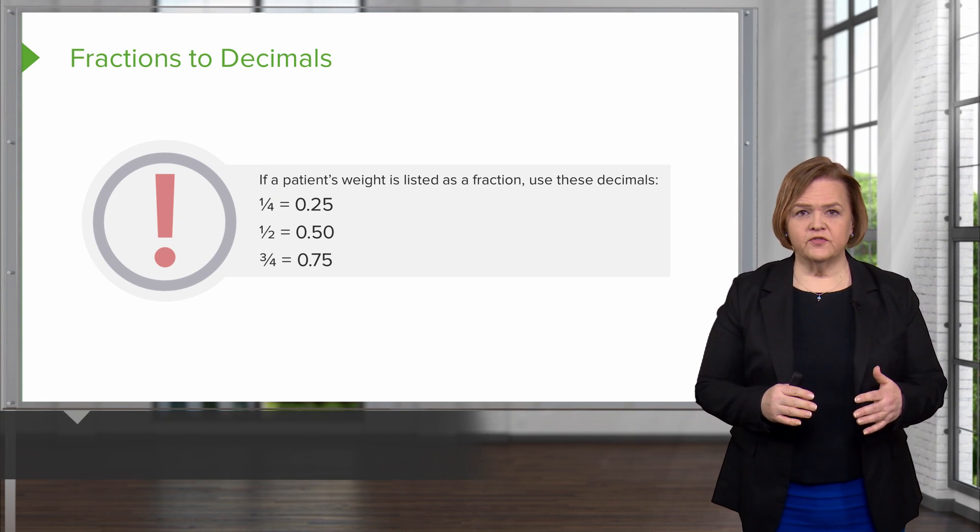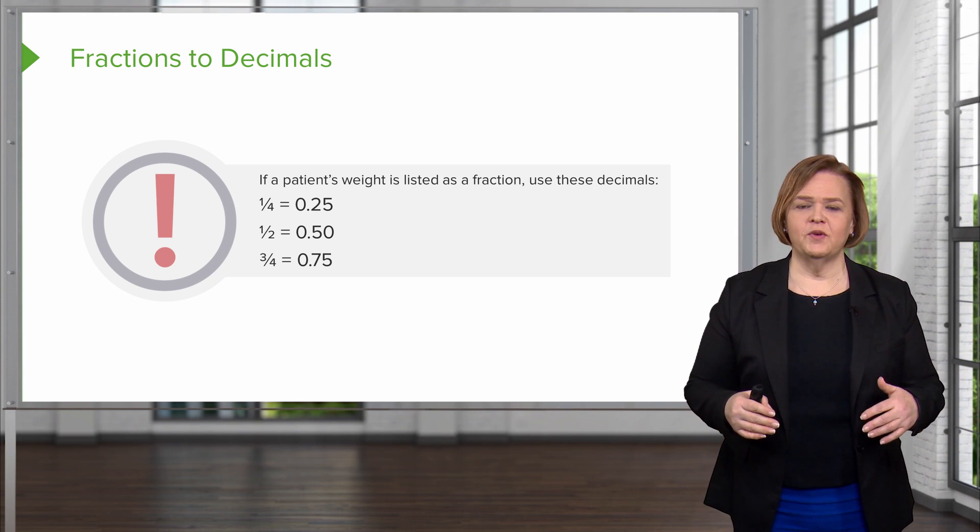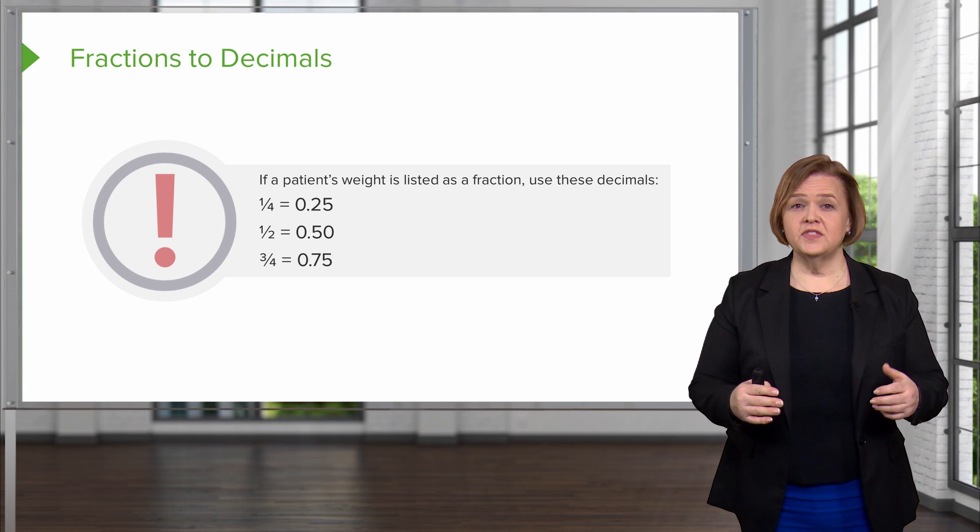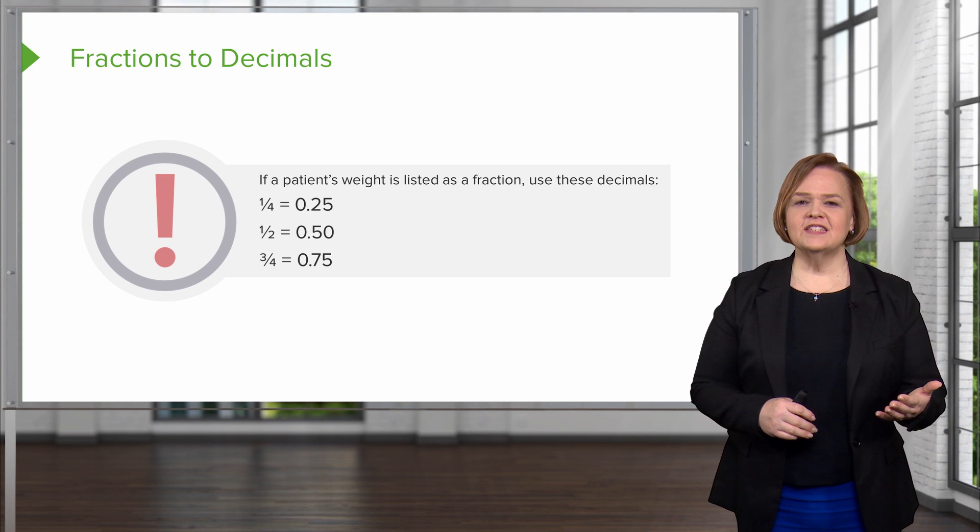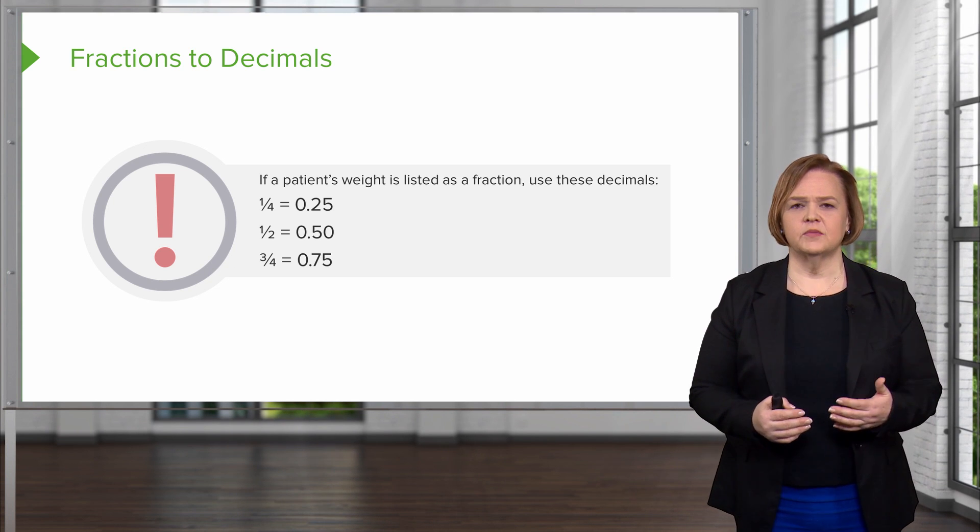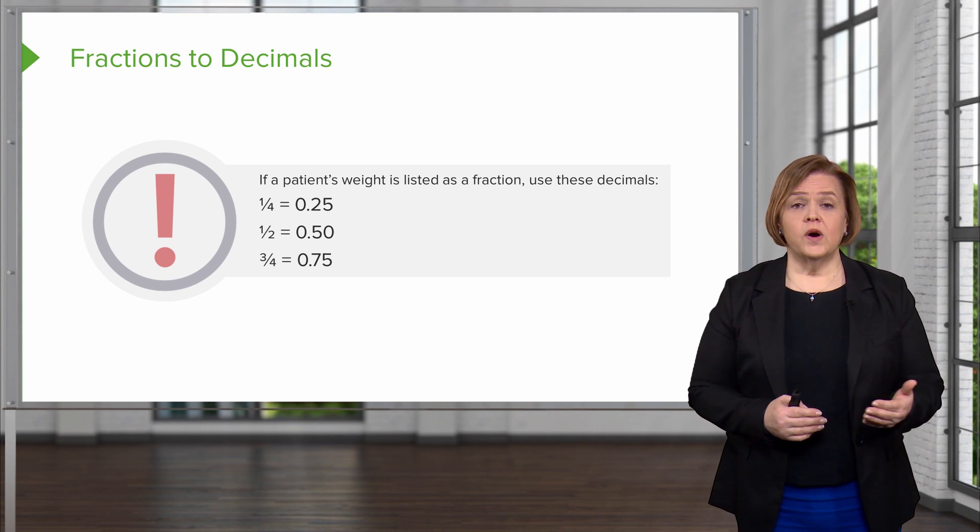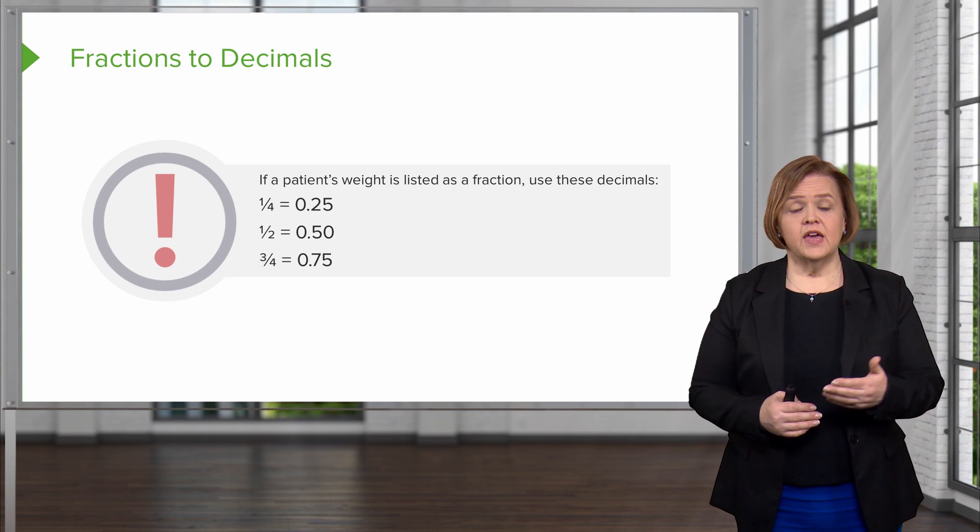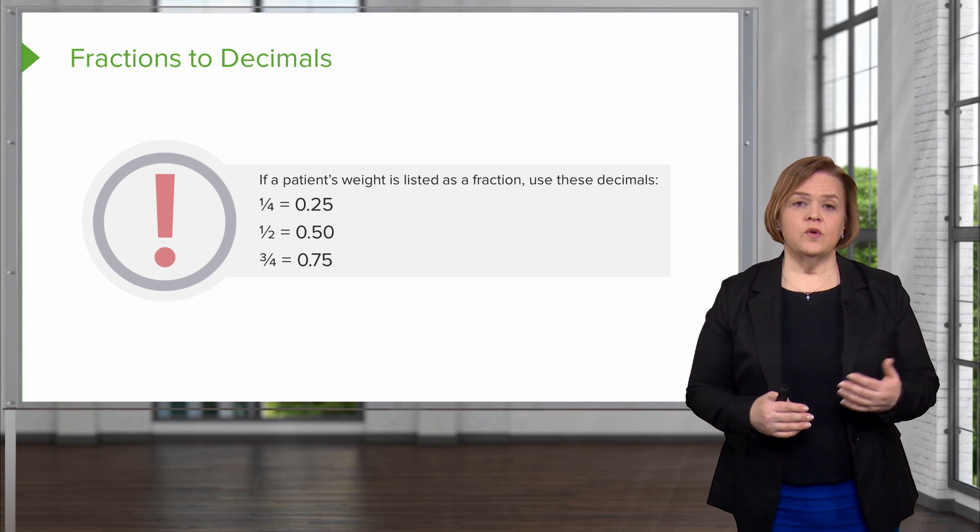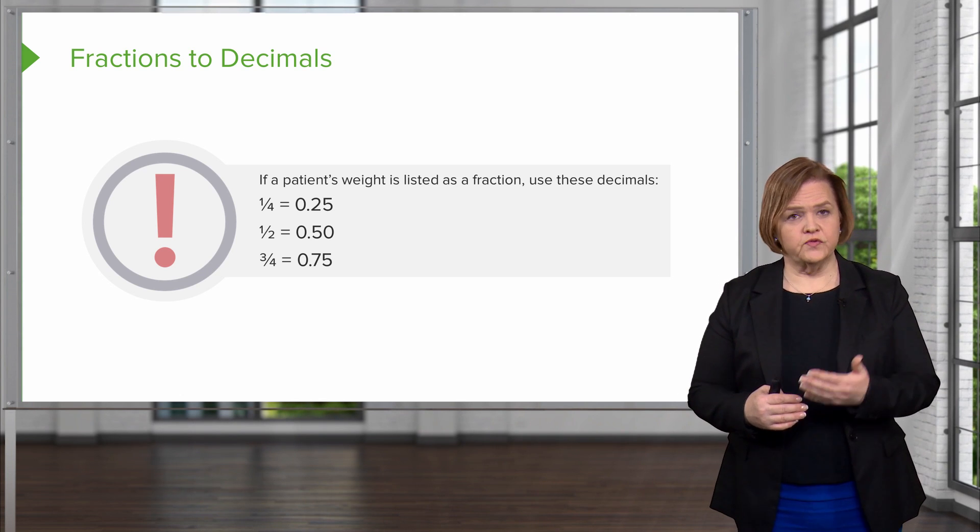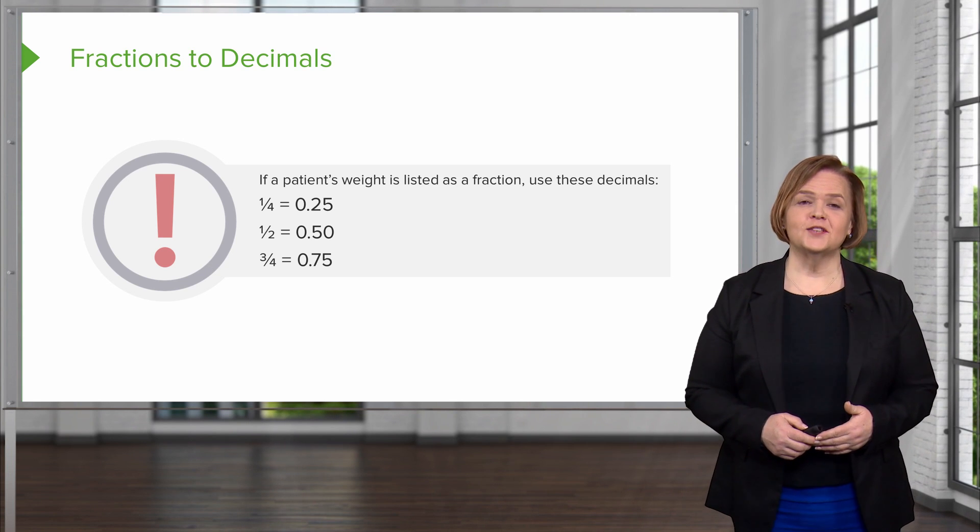Okay, now let's talk just really briefly about fractions. Sometimes these tweak people out. Sometimes it's no problem for you, but we're going to go over it anyway. So if you're already comfortable with this, just celebrate that this isn't hard for you. But if a patient's weight is listed as a fraction, we want you to use these decimals. So if you see one-fourth, that's 0.25. One-half is 0.50. And three-quarters is 0.75. So if you weigh one and a quarter pounds, it would be 1.25. So that's probably very familiar to you. If it's not, you've got it right here as a reference.